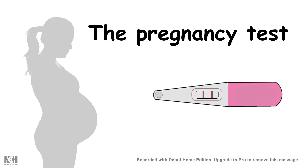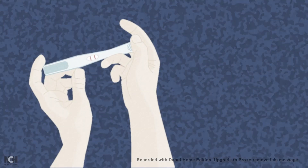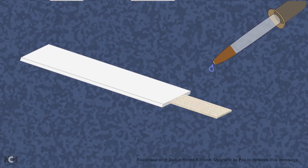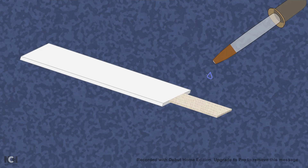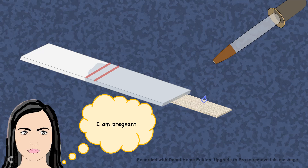In this video we would look at how pregnancy tests work. At the end of this video you would appreciate how the basic principles of antigen-antibody interaction are used to test pregnancy. You are familiar with the pregnancy strip — if you see two bands you might think you are pregnant. How does that work at the molecular level? This is the focus of today's topic.